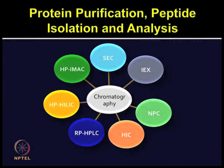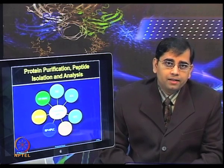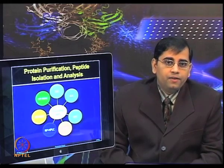Protein purification, peptide isolation and analysis can be performed by many methods. Commonly used chromatography methods include size exclusion chromatography (SEC), ion exchange chromatography (IEX), immobilized metal ion chromatography (IMAC), normal phase chromatography (NPC), reverse phase HPLC (RPHPLC), hydrophobic interaction chromatography (HIC), and hydrophilic interaction chromatography (HILIC). These are only a few; there may be more used for different applications.